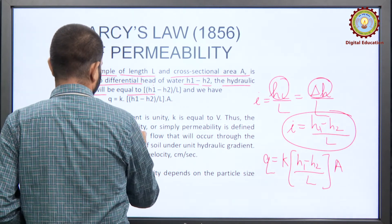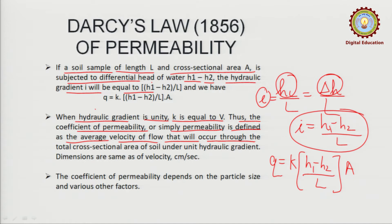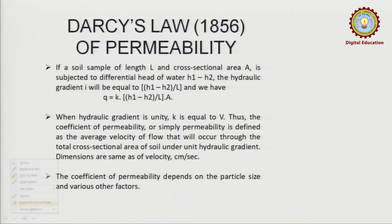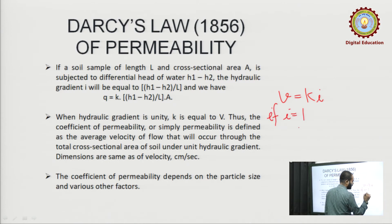When hydraulic gradient is unity (i = 1), K equals V. Thus, the coefficient of permeability is defined as the average velocity of flow that will occur through the total cross-sectional area of the soil under unit hydraulic gradient. From V = Ki, if i becomes 1, then V = K.